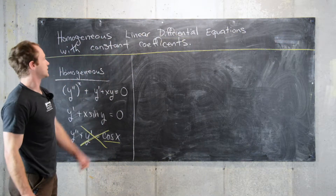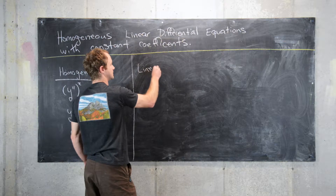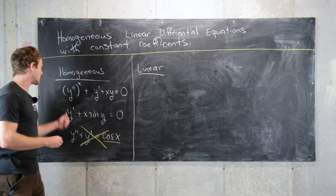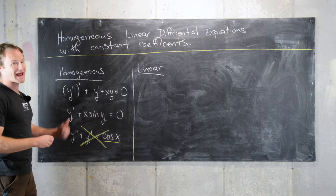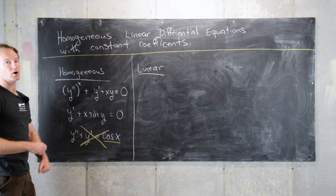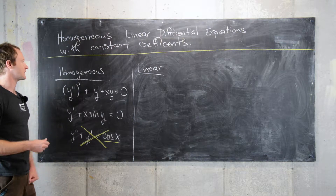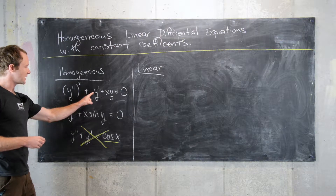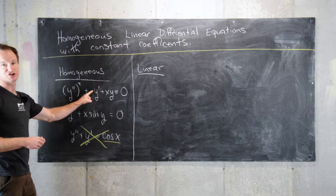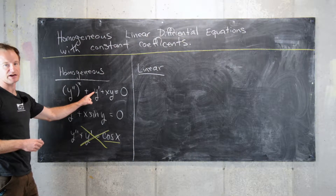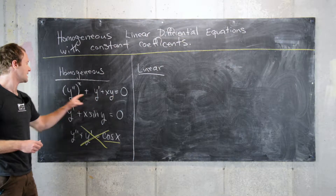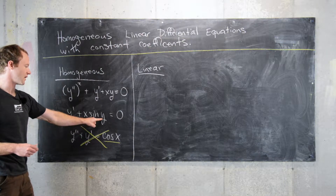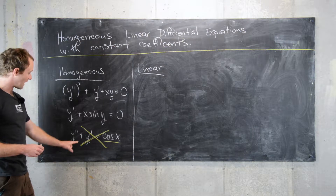Next, let's look at the word linear. By linear we mean that all of the y's and their derivatives appear only in a linear form within the differential equation. For example, y' by itself is linear, but y'' wrapped inside a function, or sin(y), is not linear.